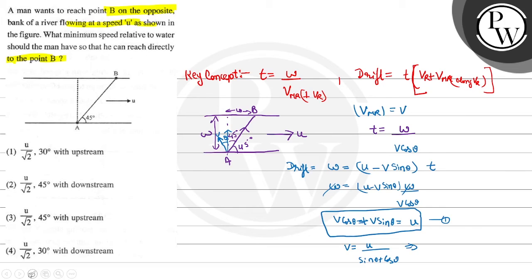V sin theta plus cos theta equals U. So V equals U divided by sin theta plus cos theta.